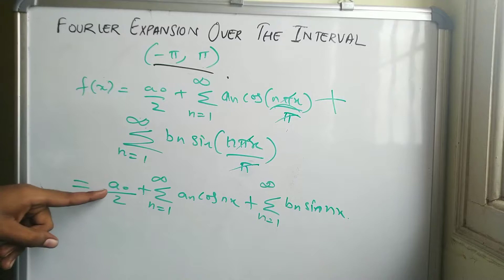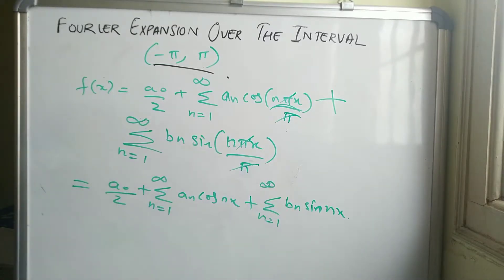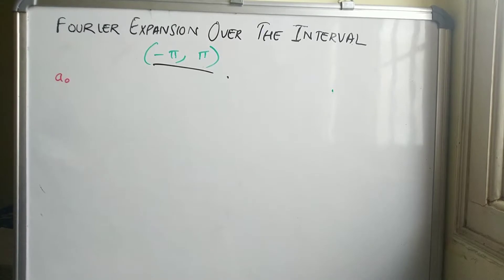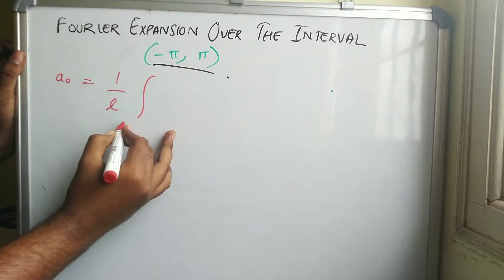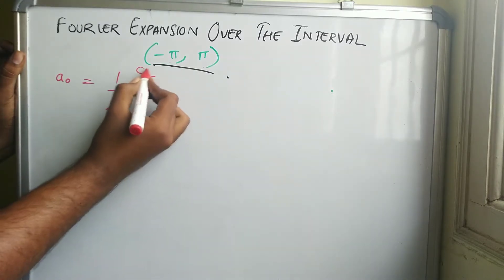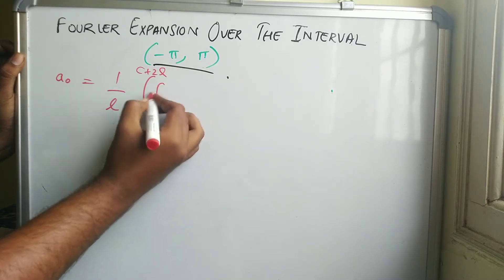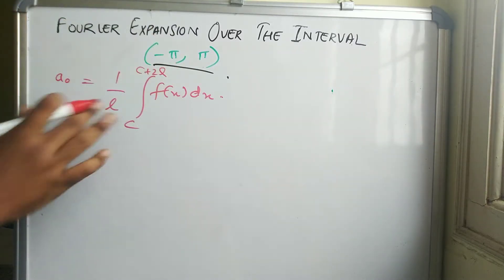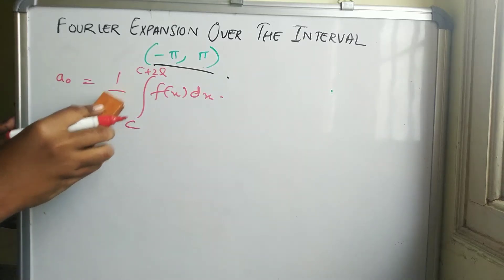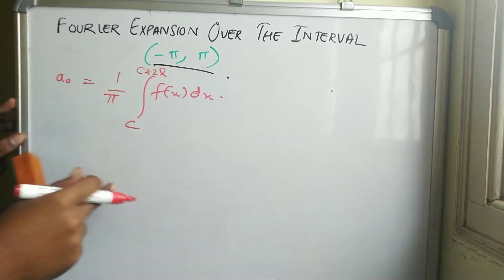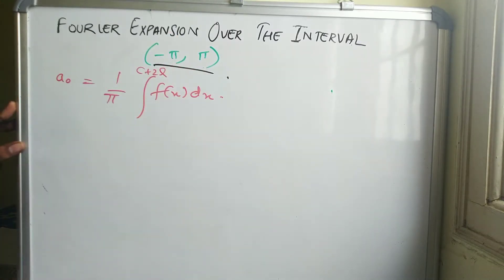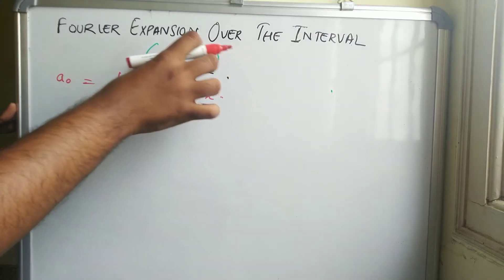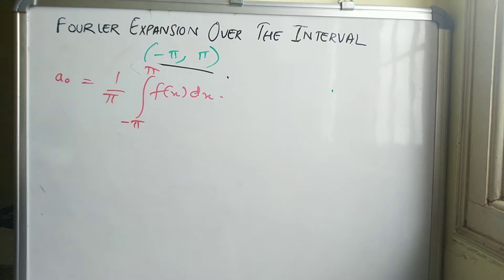Now we need to find the Fourier coefficients a₀, aₙ, and bₙ. The general formula for a₀ is: a₀ = (1/l) times the integral from a to a plus 2l of f(x) dx. Here we replace l with pi and the limits become minus pi to pi, so a₀ equals (1/pi) times the integral from minus pi to pi of f(x) dx.